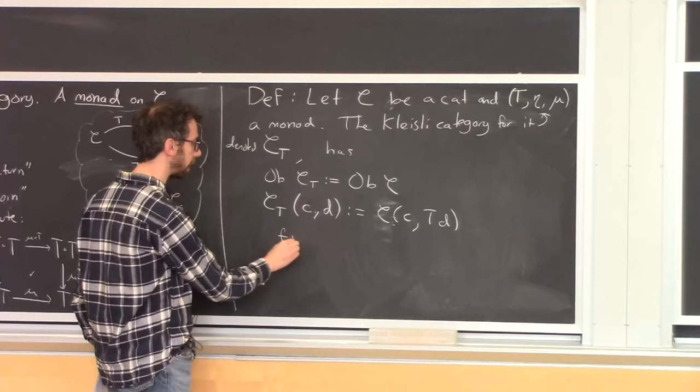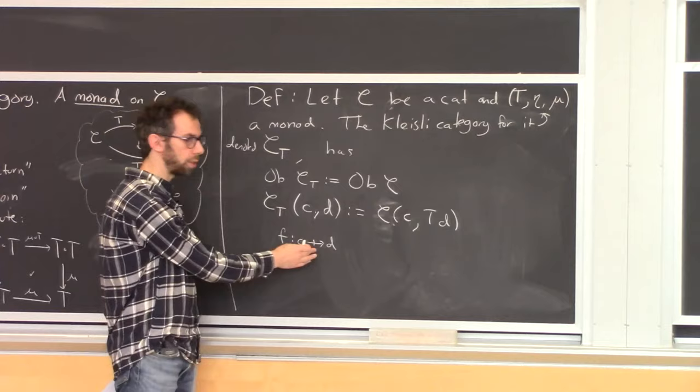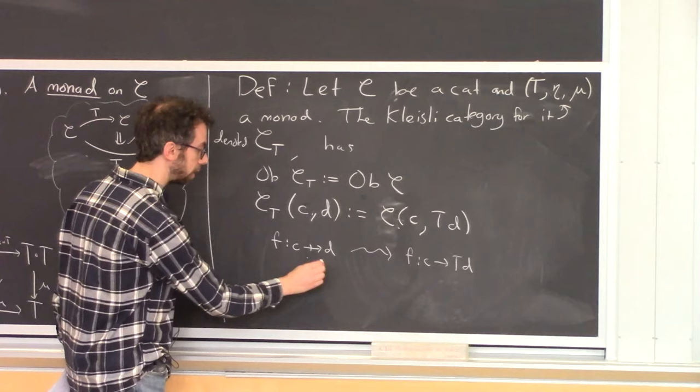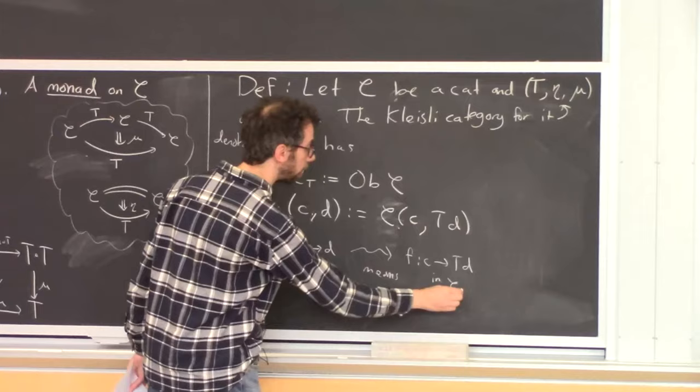In the Kleisli category CT, morphisms from C to D are the set of morphisms in C from C to T of D. So inside CT I'll write morphisms like F with a line through it — a special morphism that reminds you it unpacks into a morphism from C to T of D in the original category C.